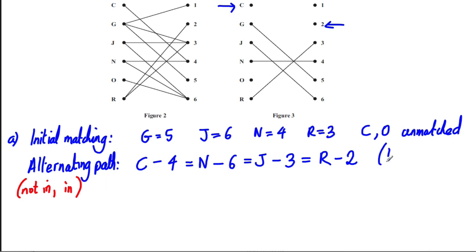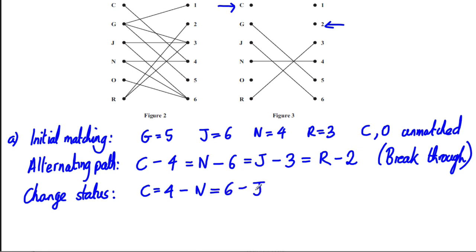So you write breakthrough here. Tell the examiner what you're doing at each stage. So we've got a breakthrough. So what we're going to do now is we're going to change the status. So tell the examiner what you're doing. Change the status. So that means all dashes turn to equals. All equals turn to dashes. C is now fixed to 4, which is no longer with N because N is now fixed to 6, which is no longer with J because J is now fixed to 3. Which is no longer with R because R is now fixed to 2.